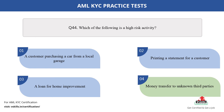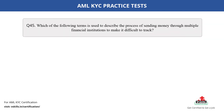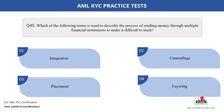Question number 45. Which of the following terms is used to describe the process of sending money through multiple financial institutions to make it difficult to track? The options are: A. Integration; B. Camouflage; C. Placement; D. Layering. The correct answer is option D.